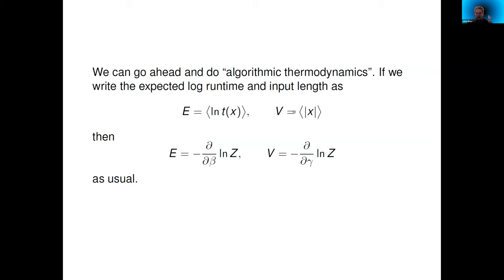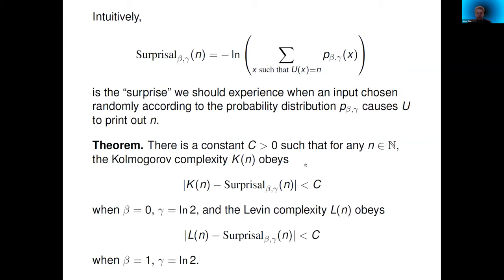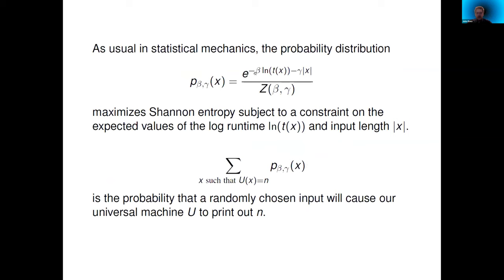One more quick question: what happens with the chemical potential in this picture, since you define temperature and pressure? In our paper we included a chemical potential — I didn't introduce it here just to keep it shorter. We chose the output of the program to be analogous to the number of particles N, the quantity conjugate to the chemical potential. So we're picking a Boltzmann-like distribution with constraints on expected log runtime, input length, and output value.